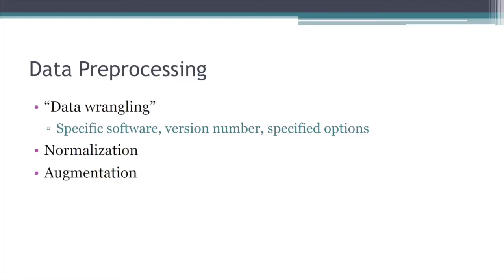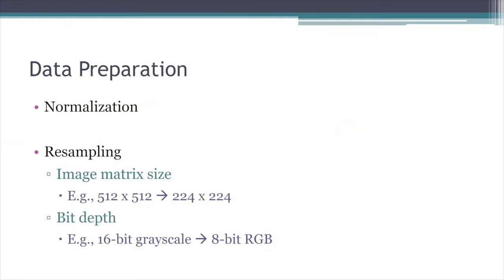Much of the work in AI is not algorithm building — it's wrangling the data. Knowing exactly what software, versioning, and libraries were used, along with the specific options, is tremendously important. How the data might have been normalized, whether data augmentation was performed — all important. In data preparation, much of the work is normalization: resampling an image, putting it into a different image size or bit depth than acquired, perhaps adjusting to a certain window and level scheme. These are critical to understanding how suitable the information is to generalize going forward.